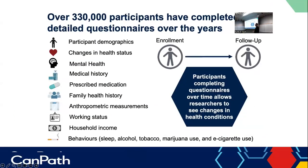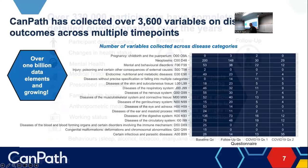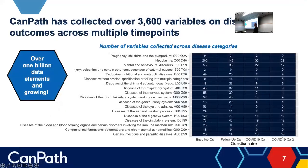The questionnaire data is important — from electronic health records you don't get smoking habits, drinking habits, where you live, or whether you live near a dry cleaner. Those are the kinds of things captured in questionnaire data. From over 330,000 participants we've captured all kinds of information including medical and medication histories and anthropometric measurements. We follow people from enrollment through follow-up. This year we're celebrating 15 years of CANPATH, and we've captured at least 4,100 variables per participant — likely an underestimate.